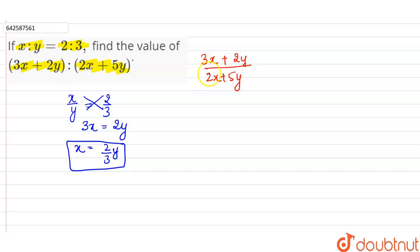So this is equal to 3 into 2 by 3y plus 2y, divided by 2 into 2 by 3y plus 5y.